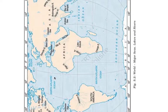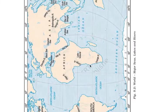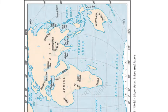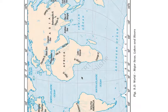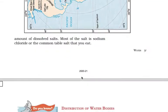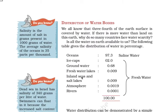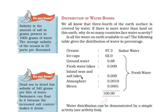Let us look at these major seas, lakes and rivers. Here you can see the Mediterranean Sea, Indian Ocean, Pacific Ocean, Southern Ocean, and many other oceans. This is the distribution of water across the earth.